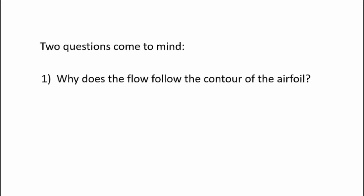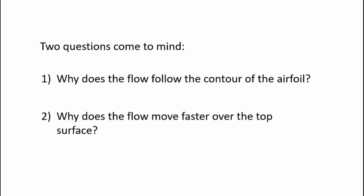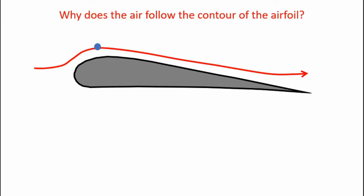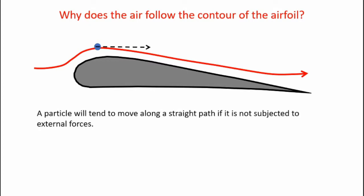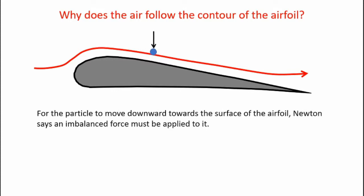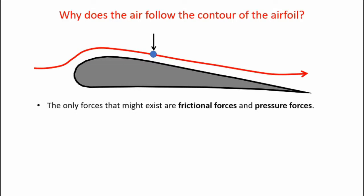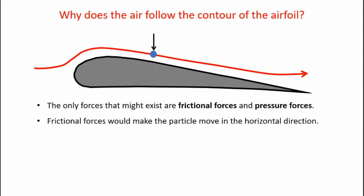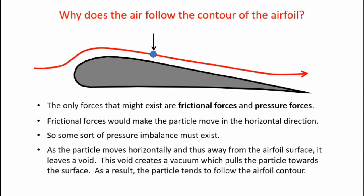So two questions come to mind: why does the flow follow the contour of the airfoil, and why does the flow move faster over the top surface? Newton says a particle moves in a straight line unless acted upon by an external force. But in reality the particle moves towards the surface of the airfoil, so some imbalanced force must be applied. The only forces that might exist are frictional forces and pressure forces. Frictional forces would make the particle move horizontally, so a pressure imbalance must exist. As a particle moves horizontally away from the airfoil surface, it leaves a void that creates a small vacuum, pulling the particle towards the surface. As a result, the particle tends to follow the airfoil contour.